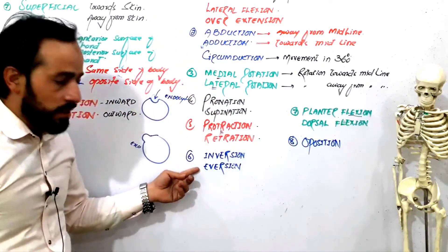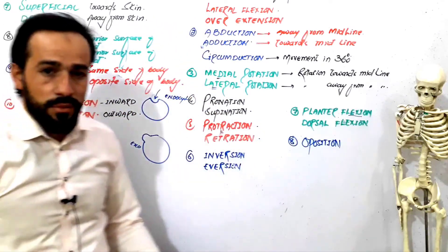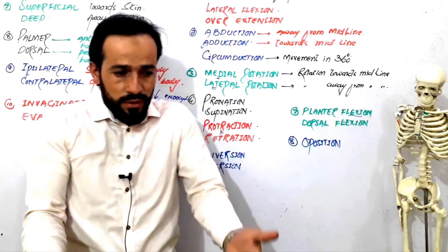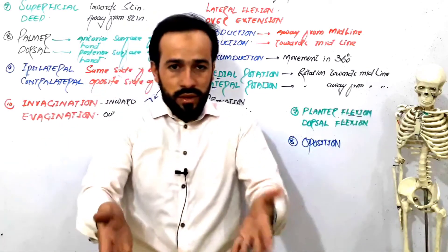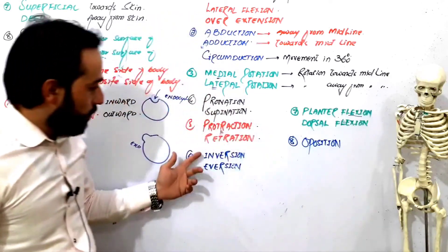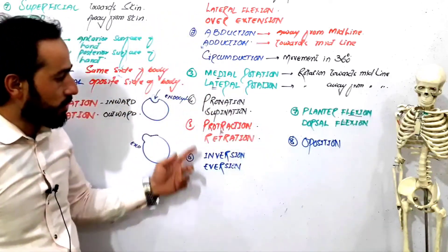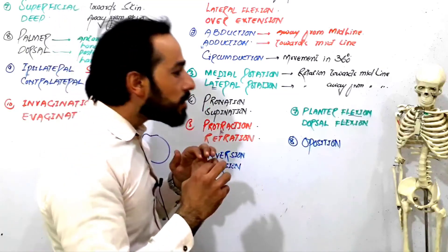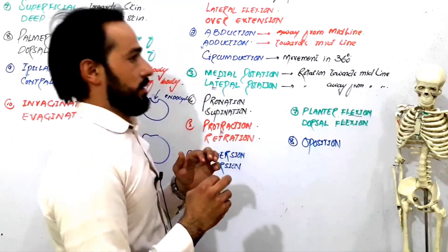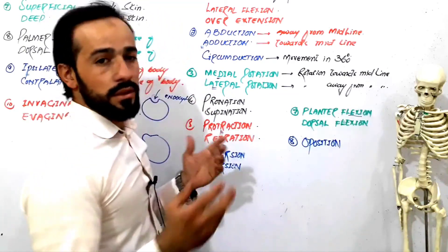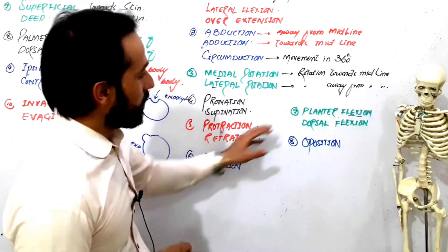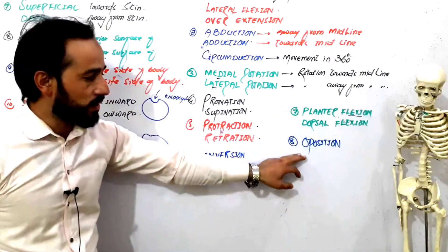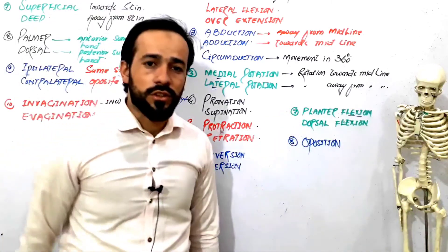Then there is inversion and eversion — the camera cannot focus on my feet but these were explained earlier. Then protraction and retraction — these are movements of the neck. Finally, plantar flexion, dorsiflexion, and opposition.